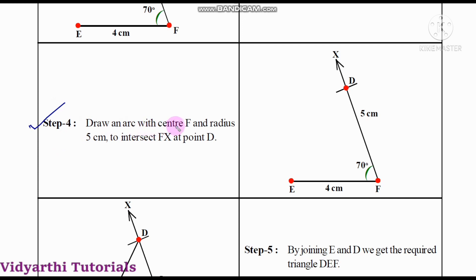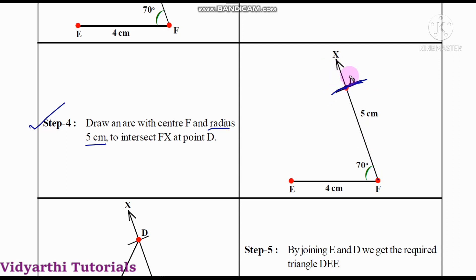Step four: draw an arc with center F and radius 5 centimeters to intersect FX at point D. Place the compass at F, take 5 centimeters radius, and draw the arc. The arc intersects the ray EFX and this point is called D.